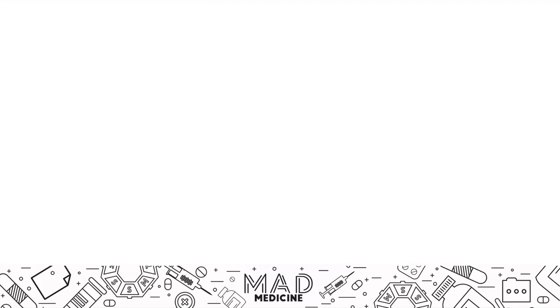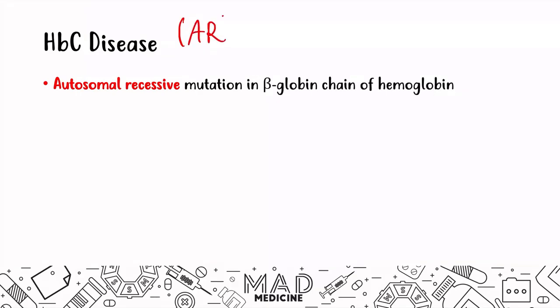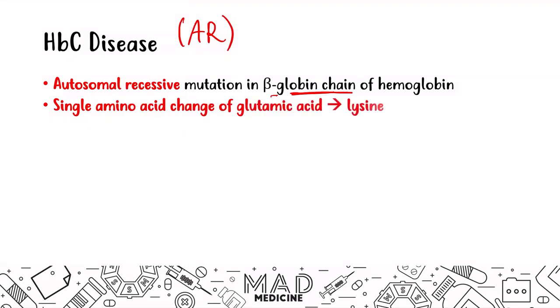Let's talk about our first of the two hemoglobinopathies you definitely need to know, and this is going to be hemoglobin C disease — HbC disease. This is an autosomal recessive mutation in the beta globin chain of hemoglobin. What ends up happening is that you're going to have a single amino acid change: glutamic acid being converted into lysine.